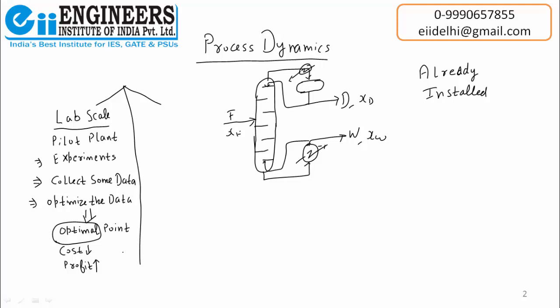The lab-scale approach requires time for experiments, has many errors as experiments are carried out, and optimization calculations are required — so it is time-consuming, costly, and not error-free. On the contrary, the other method is known as modeling and simulation.